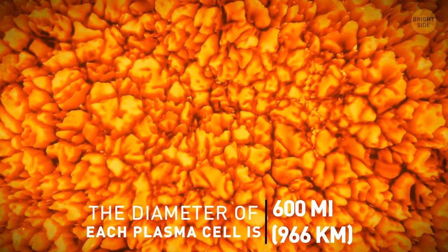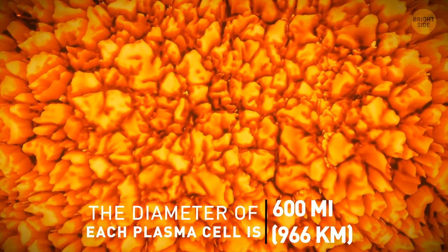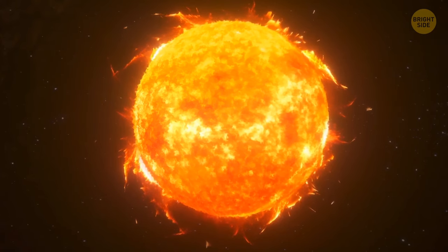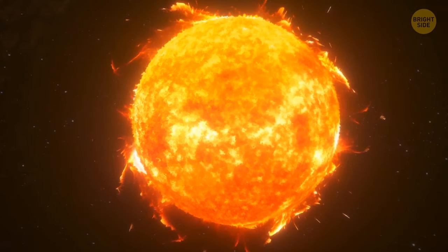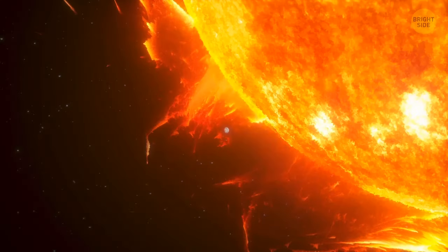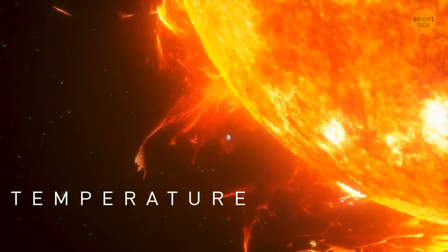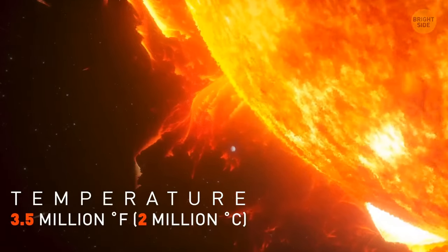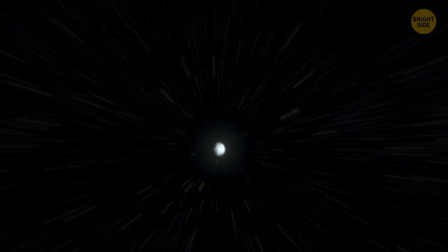It gets heated to 10,000 degrees and consists of granules, cells of plasma 600 miles in diameter each. Moving further, we get to the crown. That's the star's thin atmosphere. It's getting hotter again with temperatures reaching 3.5 million degrees.